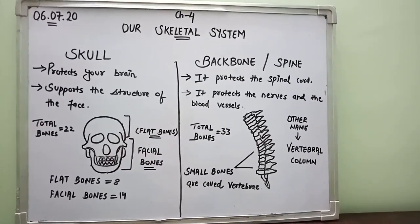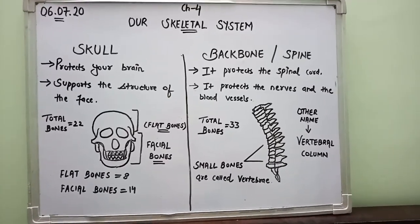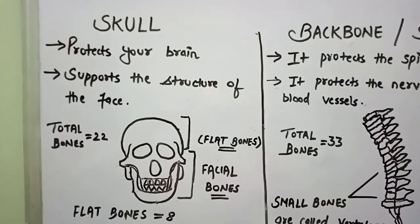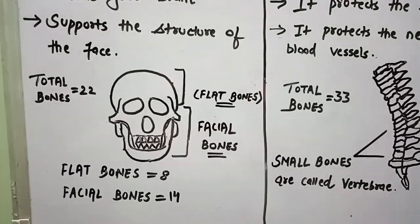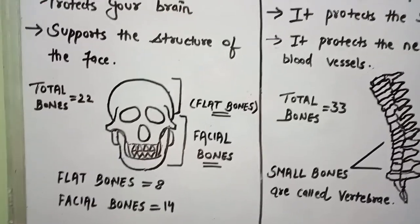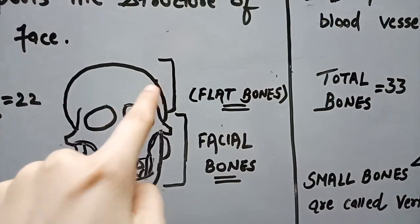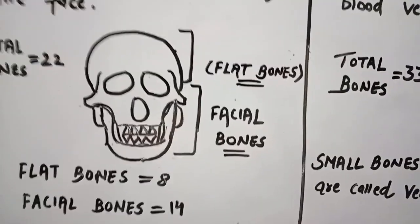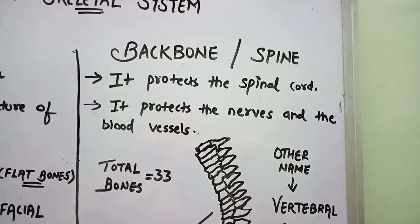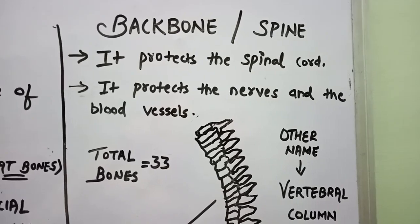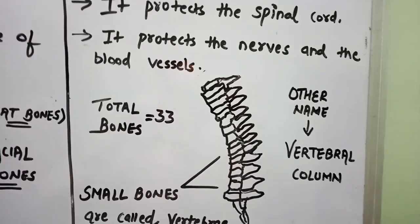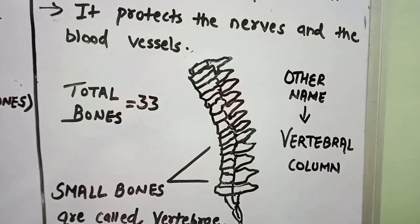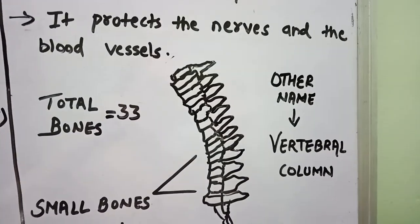Students, let's have a quick recap of today's topic — skull and backbone. Starting from the skull: it protects your brain, supports the structure of your face, and in total we are having 22 bones inside our skull, out of which 8 are flat bones and 14 are your facial bones. The upper portion is called flat bones, and the lower one which protects your eyes, nose, jaws and cheek bones is known as facial bones. For the backbone, which is also known as the spine: it protects the spinal cord, it also protects the nerves and blood vessels. In total we are having 33 bones, and those small bones are called vertebrae. The other name of your backbone is the vertebral column.